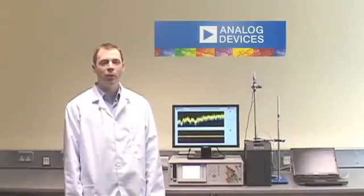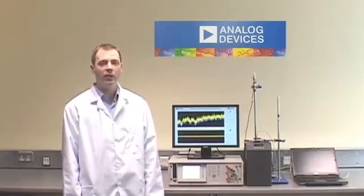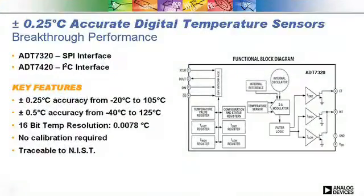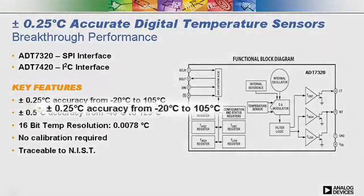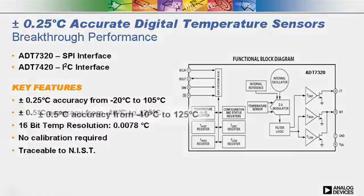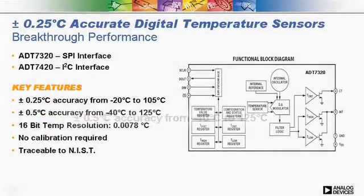Today, we will demonstrate the breakthrough performance of ADT-7320, one of our two new 16-bit digital temperature sensors. These sensors offer industry-leading specifications of 0.25 degree accuracy from minus 20 to 105 degrees and 0.5 degree accuracy from minus 40 to 125 degrees.